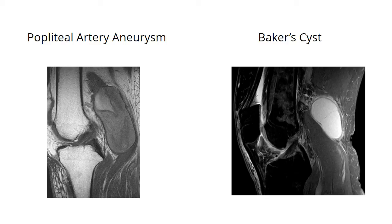The other common cause of a mass in the popliteal fossa is a Baker's cyst. The Baker's cyst refers to inflammation and swelling of the semimembranosus bursa, a fluid-filled sac found in the knee joint. This inflammation usually results from arthritic changes in the knee. Other less common causes of popliteal swellings include deep vein thrombosis, adventitial cysts and skeletal muscle tumours.